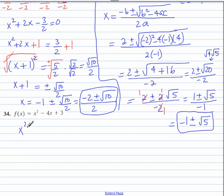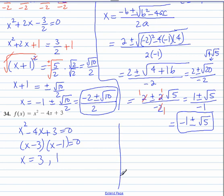Number 34. We set it equal to 0. This is factorable. So it's quite easy. So our 2 x-intercepts are at 3 and 1. Let's talk about this for a minute.